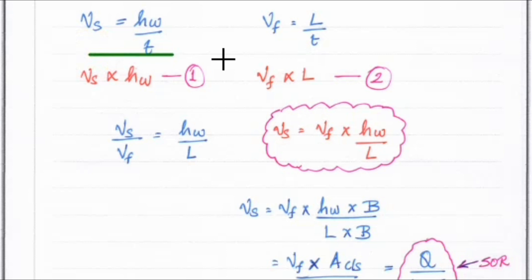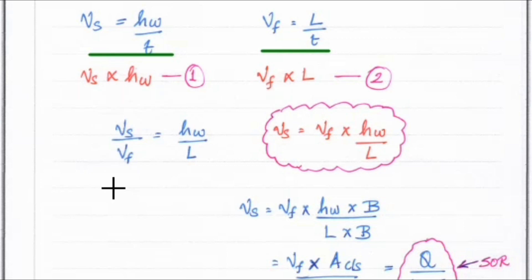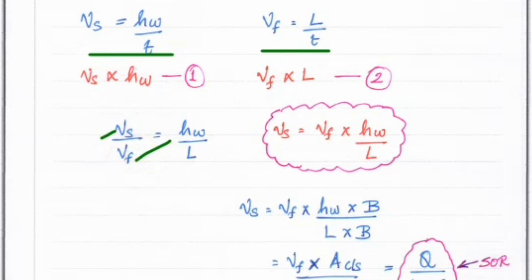The settling velocity Vs is equal to HW divided by T, and the flow velocity VF equals L divided by T. Equating these: Vs × HW = VF × L, which gives Vs / VF = HW / L, and therefore Vs = VF × HW / L.